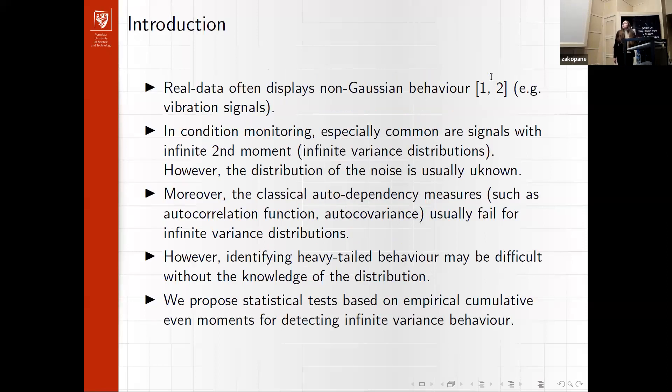Usually real data displays non-Gaussian behaviour, and the worst case scenario is when we do not have finite second moments, so the variance does not exist. In this case, we cannot use multiple classical statistical methods, such as autocorrelation or autocovariance, to measure dependence within the data.